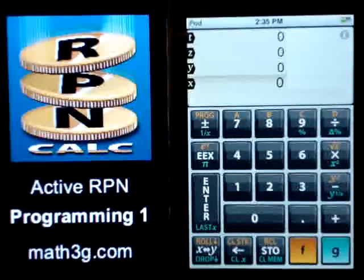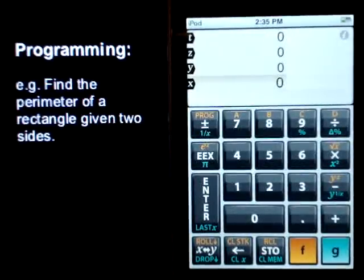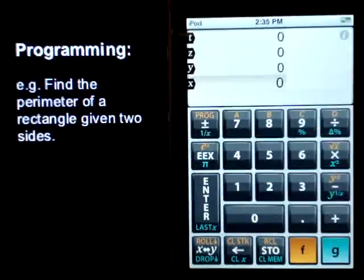So, let's get started. Find the perimeter of a rectangle given two sides.